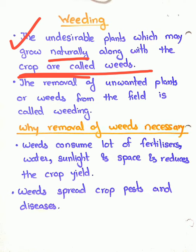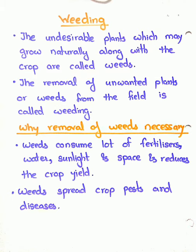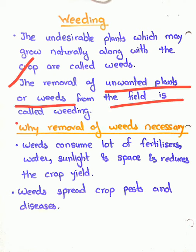The process of removal of unwanted or undesirable plants is called weeding. So what is weeding? The removal of unwanted plants or weeds from the field is called weeding.